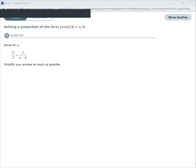Solving a proportion of the form x plus a over b equals c over d. It wants us to solve for w here. We've got 5 over 2 equals 3 over w minus 4.